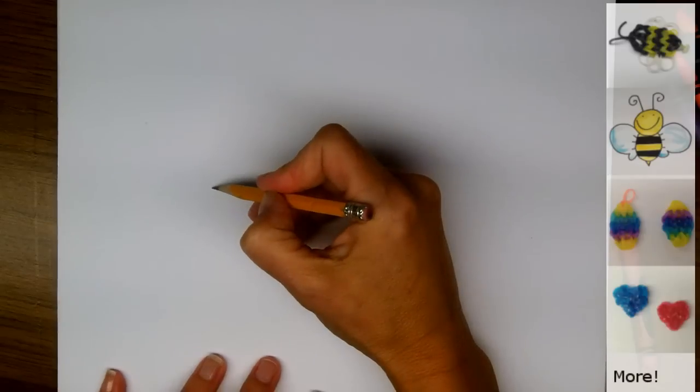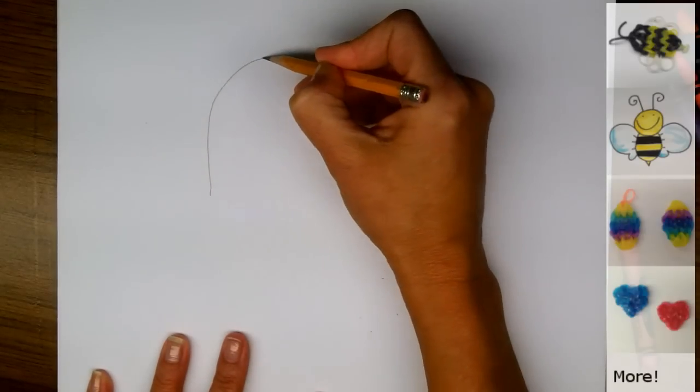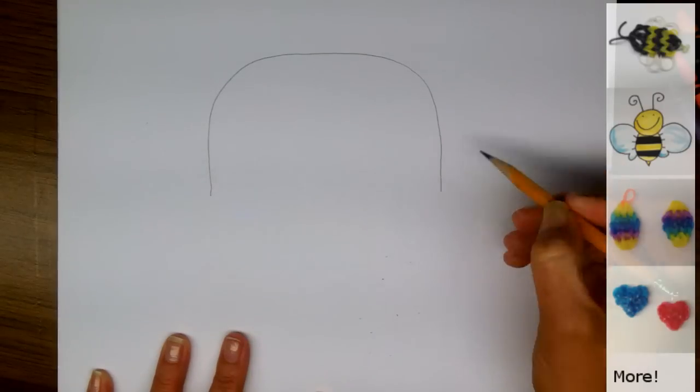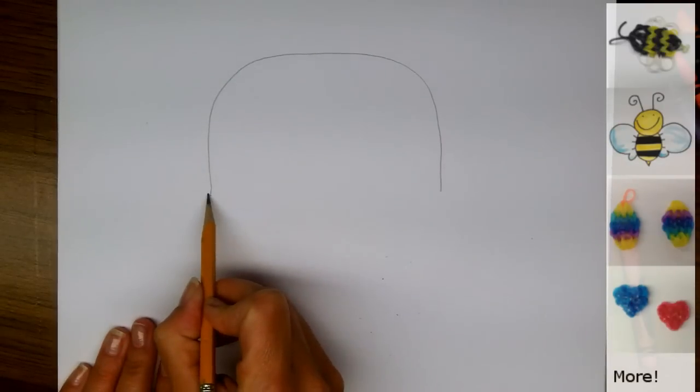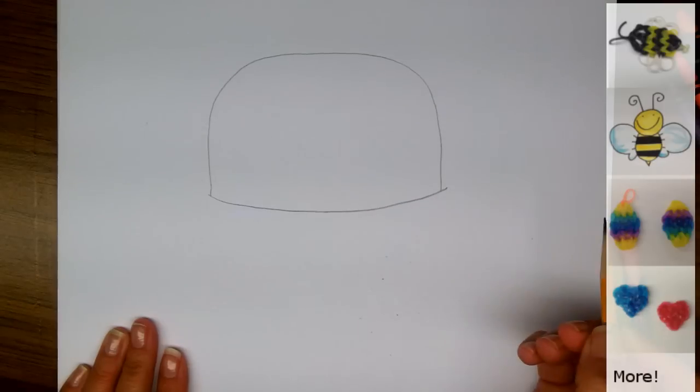To draw the basket we're going to start off by making a nice arc over for the handle, just like that, and then we're going to draw a curved line that connects the two sides of the handle. You can see I went a little bit on each side past the handle.